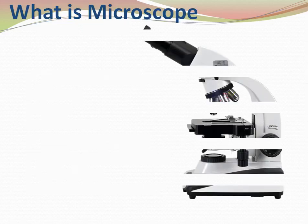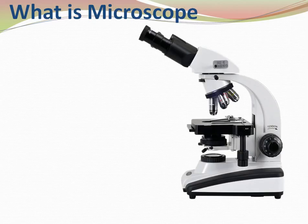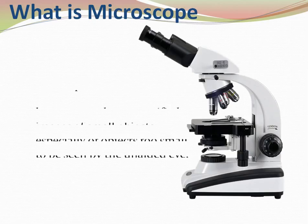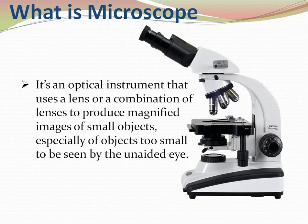First, the definition of microscope. If we define the microscope, it is an optical instrument that uses a single lens or a combination of lenses to produce a magnified image of a small object, especially objects which are too small to see by the naked eye. That is a microscope.